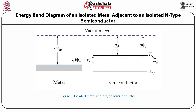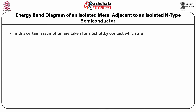Let us see how the energy band diagram of the metal in contact with the semiconductor gets modified. This figure represents the energy band diagram of two isolated metal and an N-type semiconductor placed close to each other. The symbols used represent the following: Phi M is the work function of metal, Phi S is the work function of semiconductor, Chi is electron affinity, Ec is conduction band energy level, Ev is valence band energy level, and Ef is Fermi energy level.